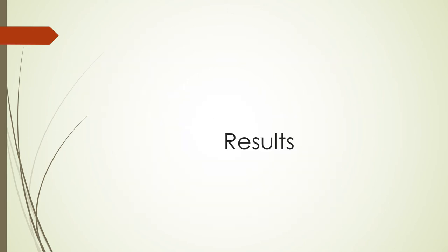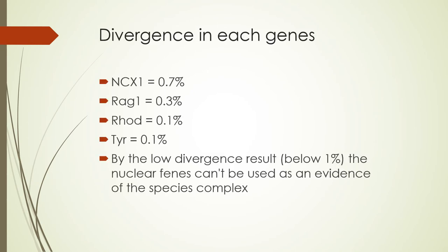This is the result of the nuclear genes analysis. From all the nuclear genes we found low divergence, which is below 1%: only 0.7% in NCX1, 0.3% in REC1, 0.1% in ROT, and 0.1% in TRHD. Because the divergence is low and below 1%, we cannot use this as evidence of a species complex.